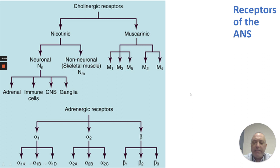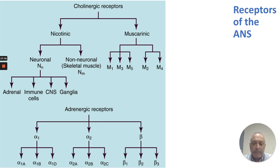Cholinergic receptors for acetylcholine come in two types: nicotinic and muscarinic. Nicotinic receptors are neuronal and non-neuronal (mostly skeletal muscle), with effectors including the adrenals, immune cells, the CNS, and certain ganglia. Muscarinic receptors are more diverse — M1 through M5 — expressed in various locations. Adrenergic receptors include alpha-1, alpha-2, and beta, which differentiate into a few different isoforms.